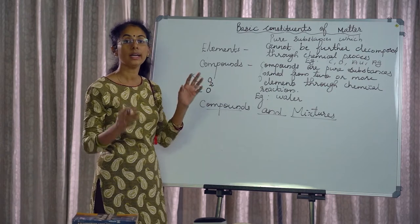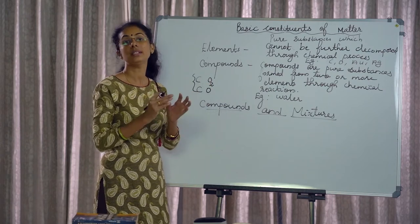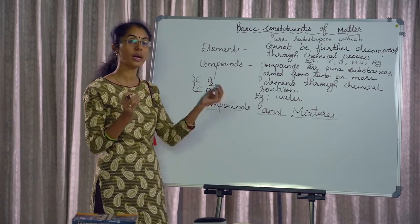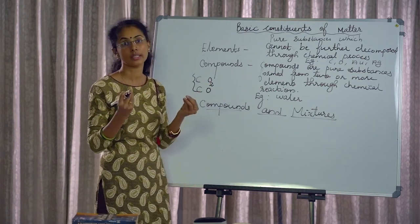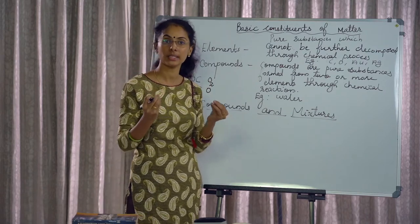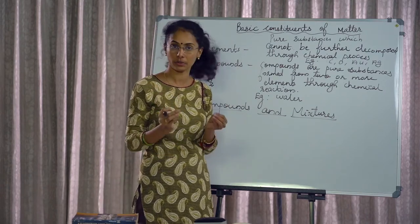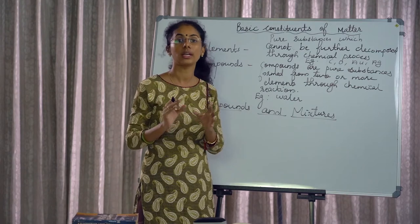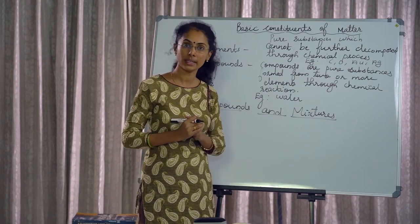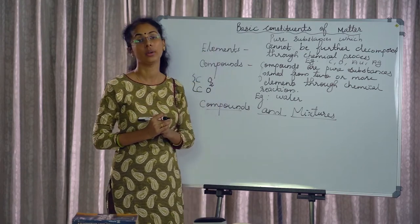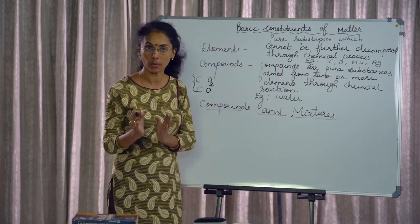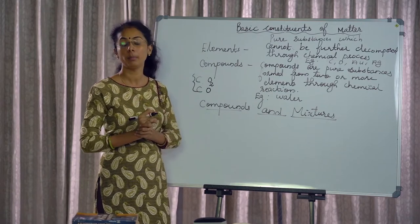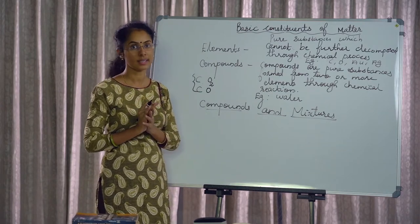When elements combine in a compound, they do so in a particular ratio. For example, hydrogen and oxygen combine in a fixed ratio to form water. They combine in that specific ratio — you cannot simply mix them in any proportion.